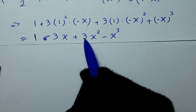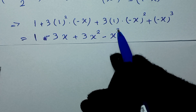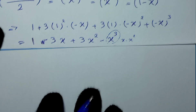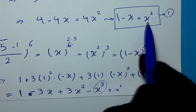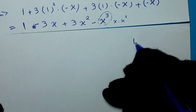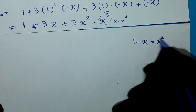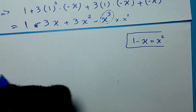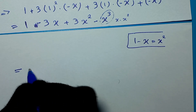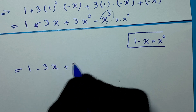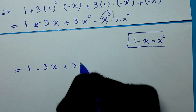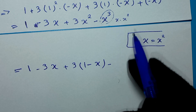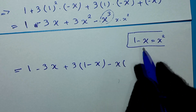We have the terms 3x² and x³. We write x³ as x times x². Since x² equals 1 minus x, we substitute: 1 minus 3x plus 3 times (1 minus x) minus x times (1 minus x).